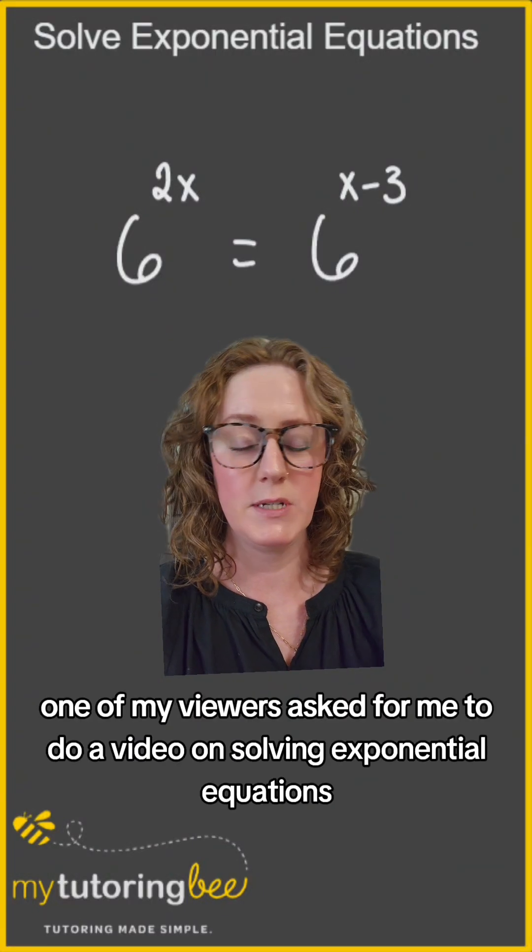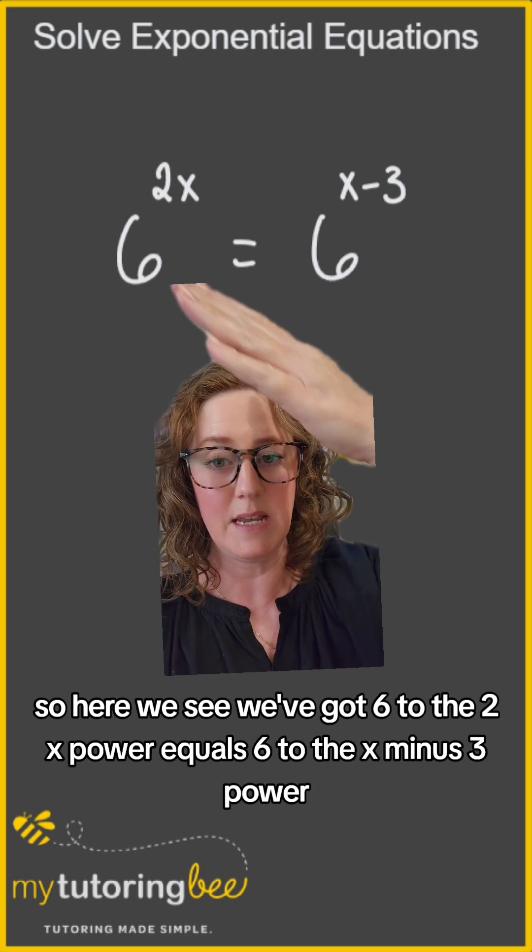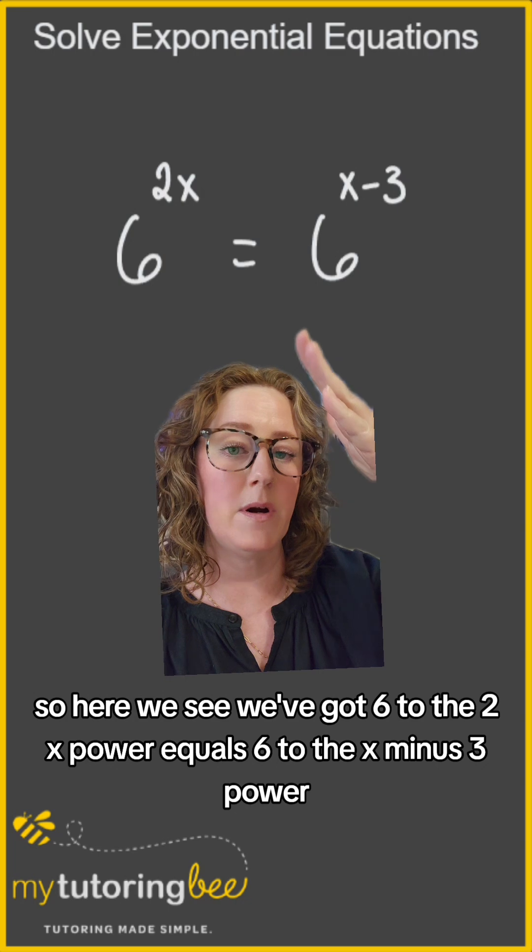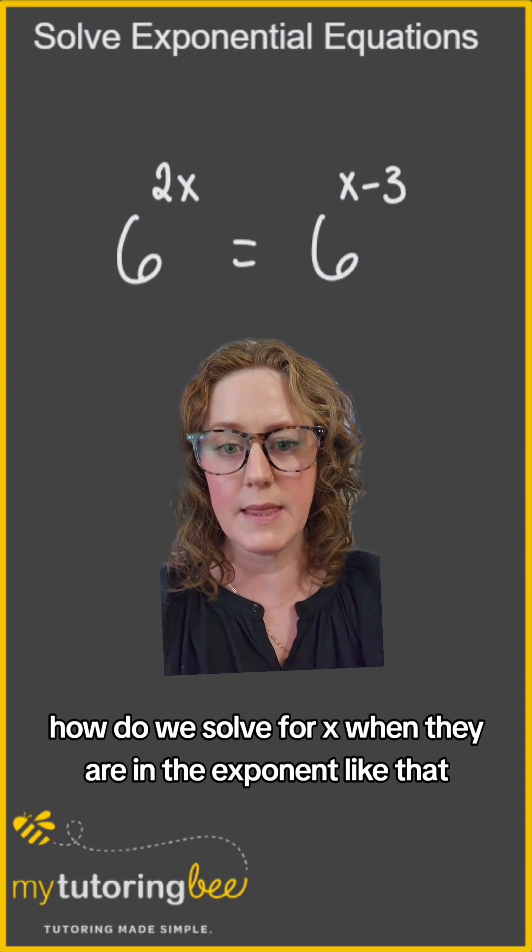One of my viewers asked for me to do a video on solving exponential equations. So here we see we've got 6 to the 2x power equals 6 to the x minus 3 power. How do we solve for x when they are in the exponent like that?